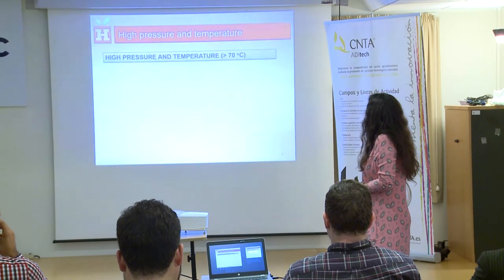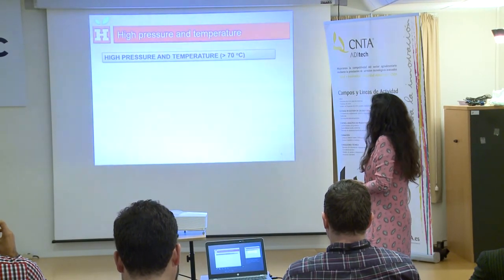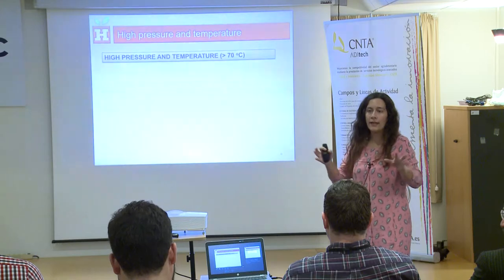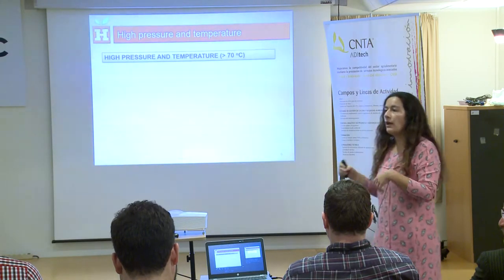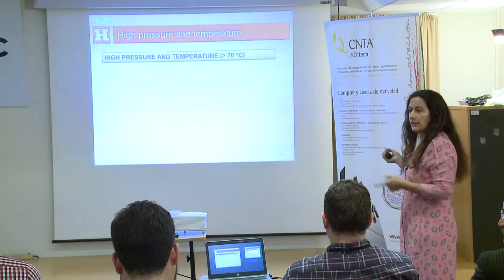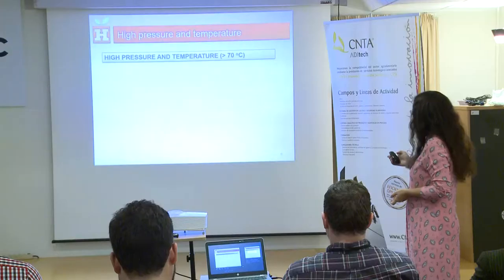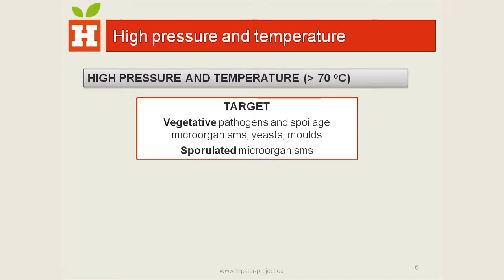But when we combine high pressure with temperature — temperatures above 70 degrees — the target can also include sporulated microorganisms.